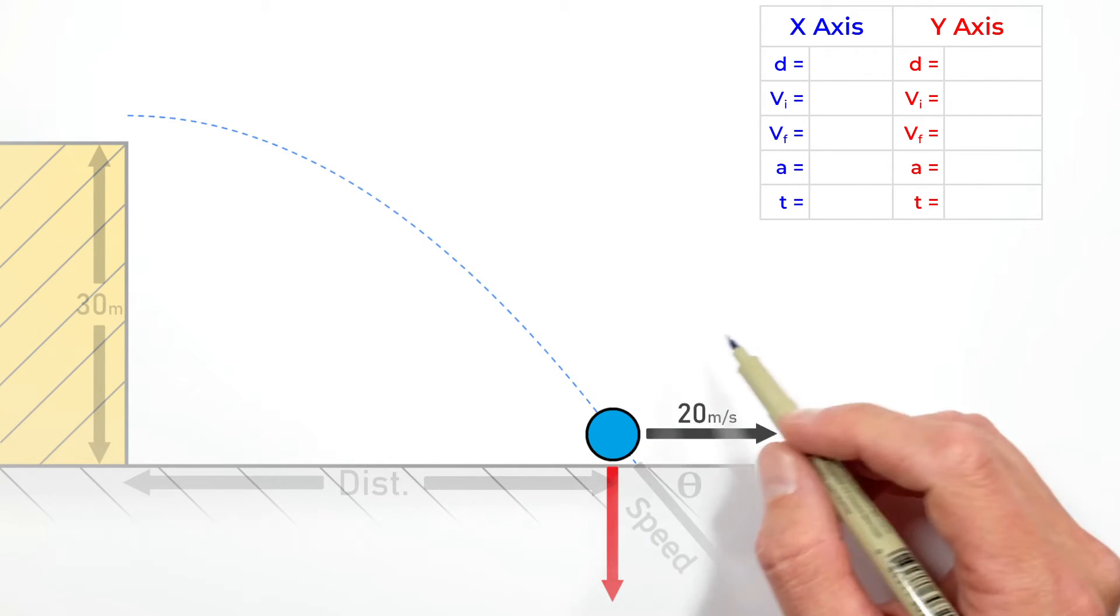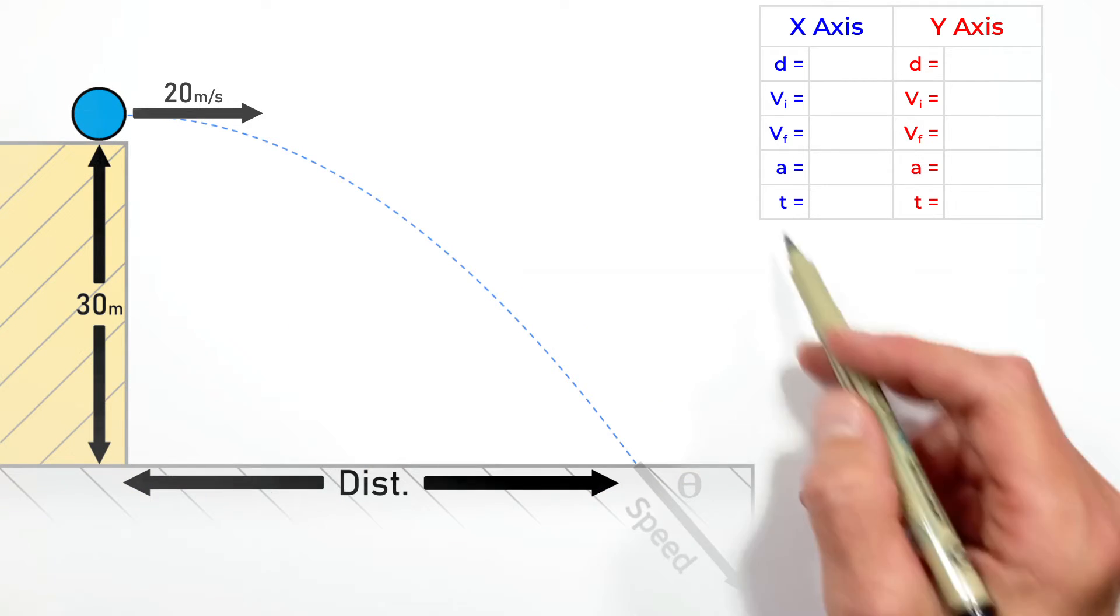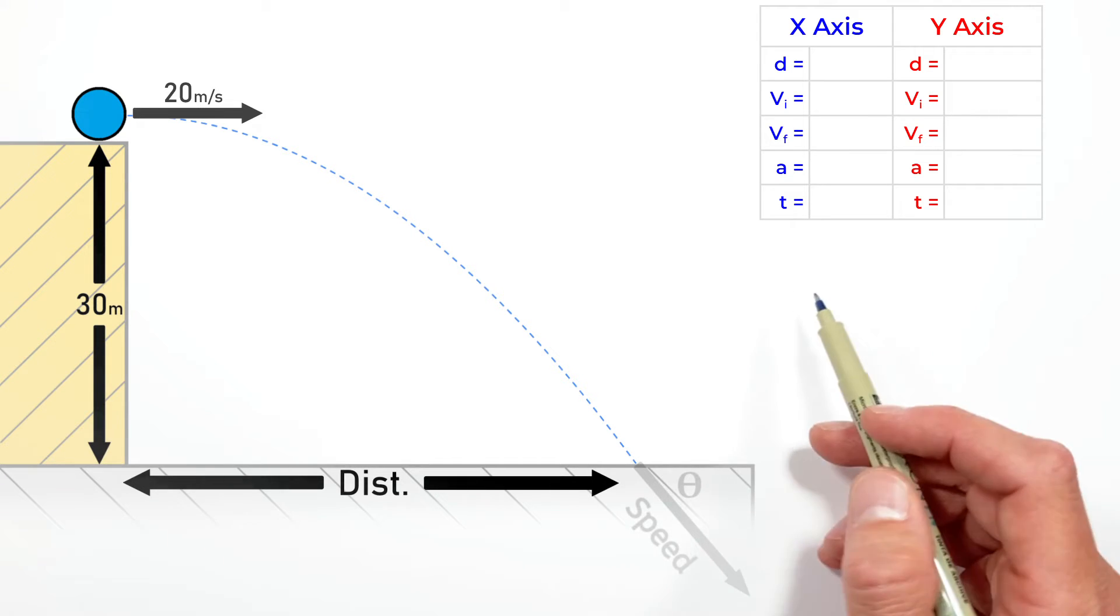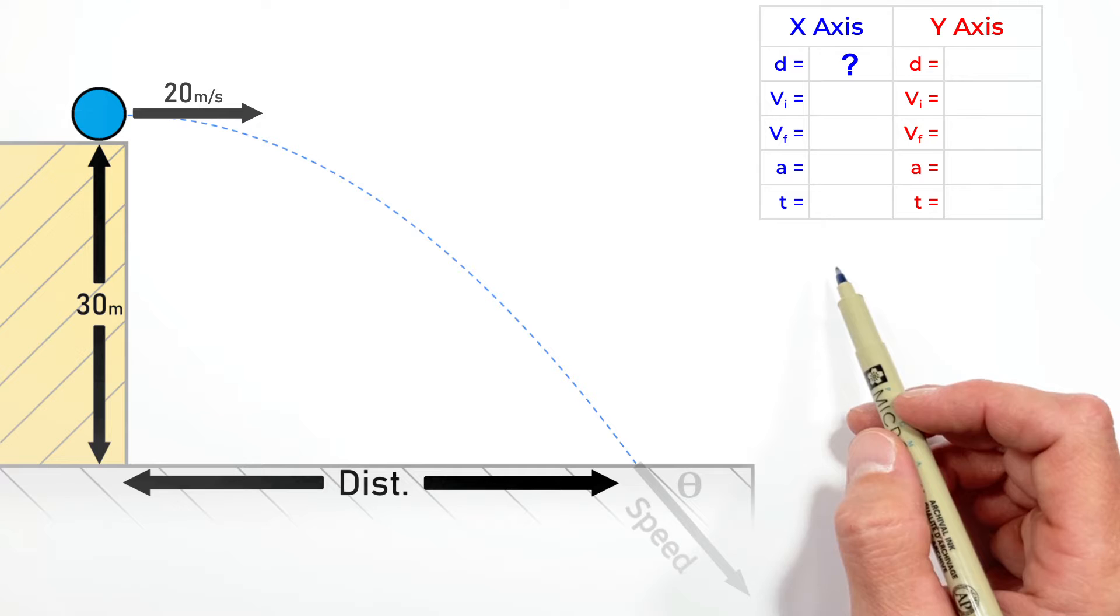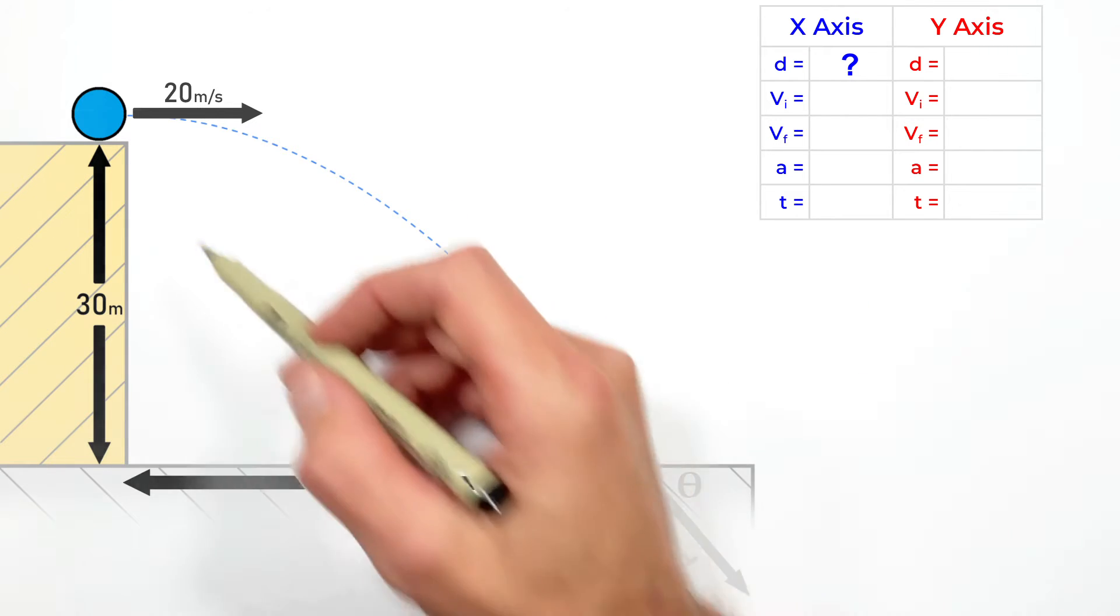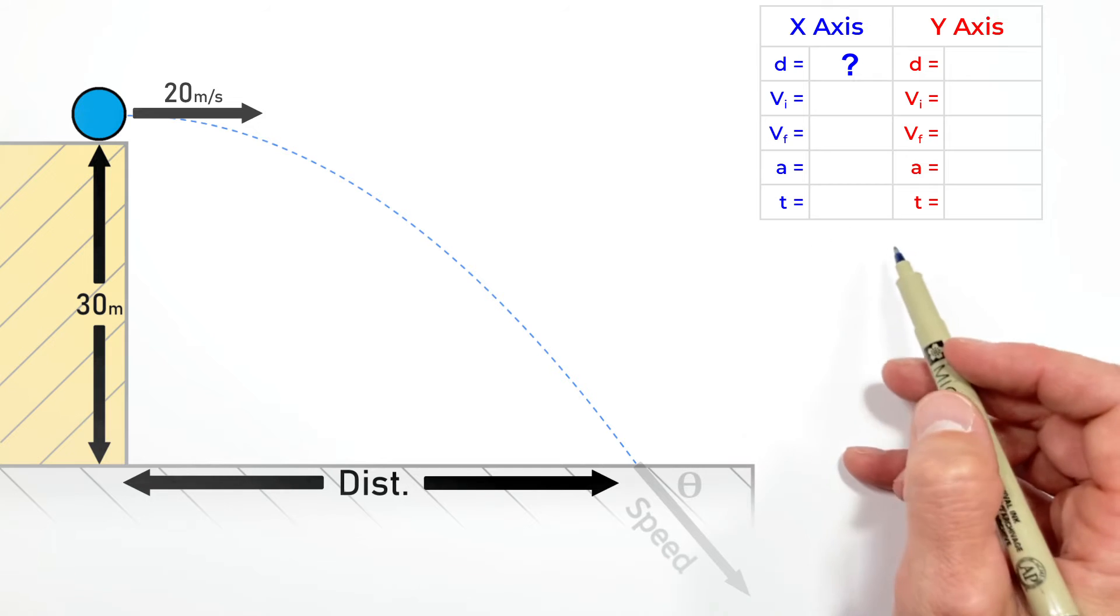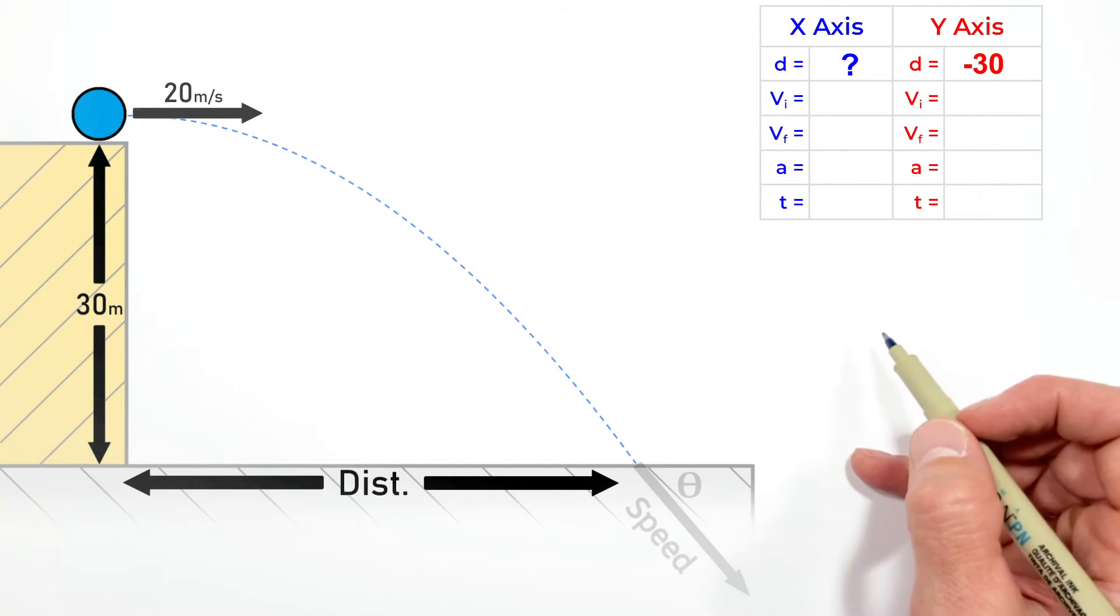Just like any other kinematics problem, we take the information given and plug it into our table. We're trying to solve for the horizontal displacement, that is the displacement in the x-axis. The ball starts at the top of the cliff and lands on the ground, meaning vertically it moves down 30 meters. I'm going to say that's negative because it's downward.